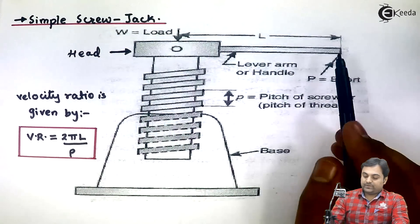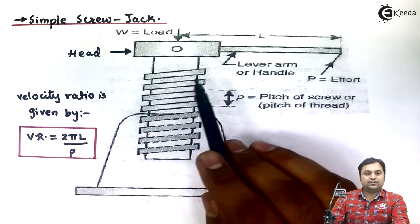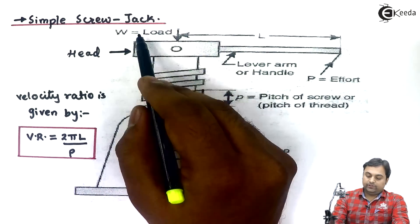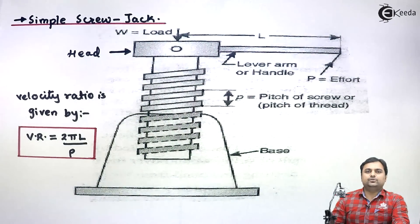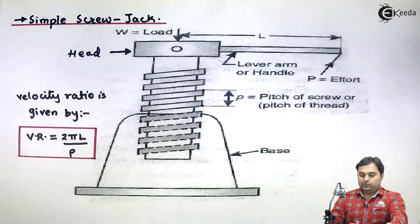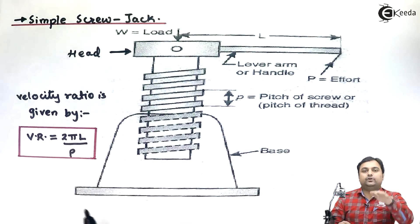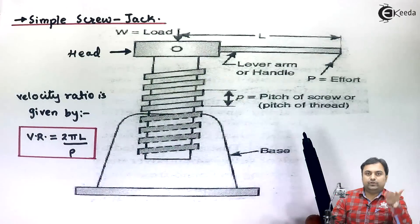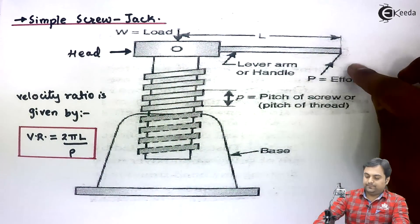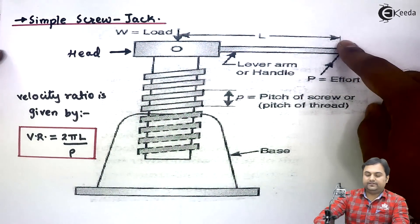Now how this machine functions. First of all, the load would be kept on the head. Screw jack is basically used for lifting of cars, so this load would be the weight of the car which comes onto the screw jack. We want to lift that car, so for that purpose effort would be applied at this handle. We would grip this handle and rotate it.